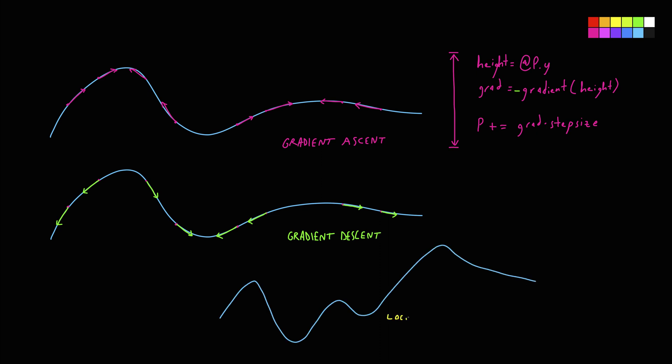Gradient descent will converge to a local minima rather than the global minima. In mathematical analysis, the maxima and minima of a function, known collectively as extrema, are the largest and smallest values of the function — either within a given range (local or relative extrema), or on the entire domain of a function (global or absolute extrema). It's pretty easy to understand them intuitively. Lastly, we need a way to determine when to stop. A popular choice for termination criteria is when the cost stops reducing. Let's see how to implement this in Houdini now.